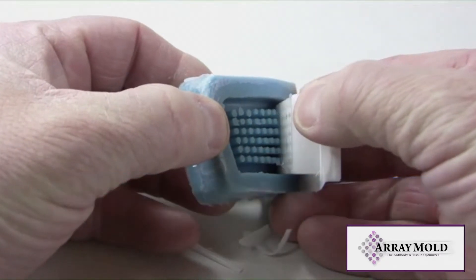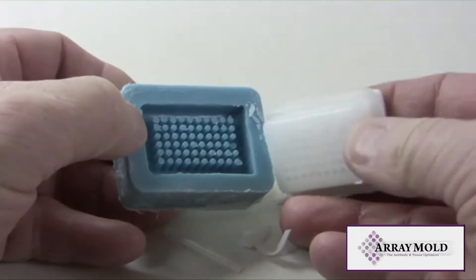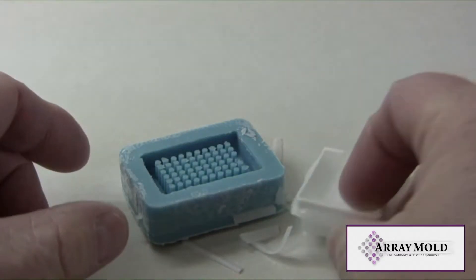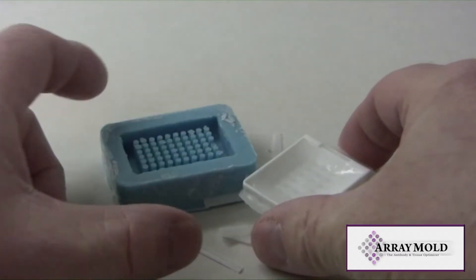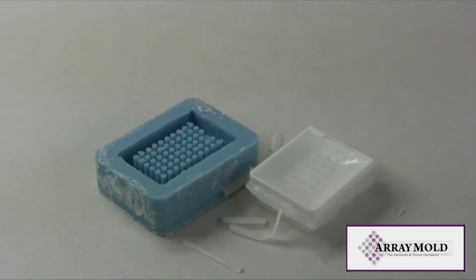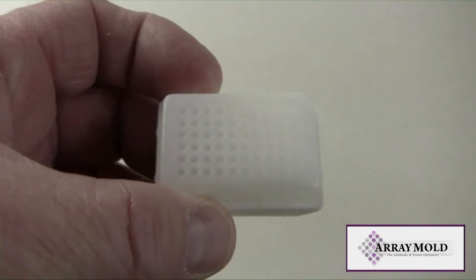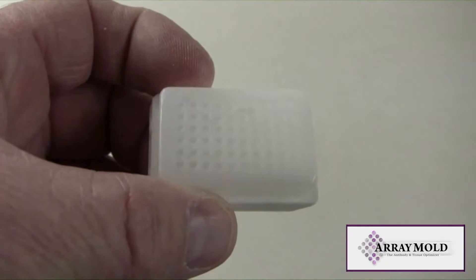The array mold we're using here is one of our first created. As you can see, it came to us with a short core rod in it. Since we couldn't sell it, we've been using it for our testing. In the last three years, I believe we've made around 40 to 60 paraffin arrays with this single array mold.